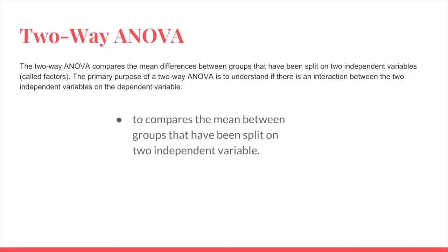Hi, guys. It's Marsha. And now I'm going to explain about the two-way ANOVA. So two-way ANOVA is kind of more complicated than one-way ANOVA. Because here, we are dealing with two independent variables. So in definition, the two-way ANOVA compares the mean differences between groups that have been split on two independent variables. And the primary purpose of a two-way ANOVA is to understand if there is an interaction between the two independent variables on the dependent variable.